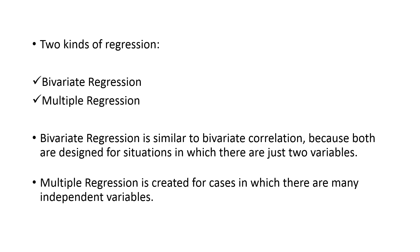Two kinds of regression are there: bivariate regression and multiple regression. Bivariate regression is similar to bivariate correlation because both are designed for situations in which there are just two variables — one independent and one dependent. Multiple regression is created for cases in which there are many independent variables and one dependent variable.